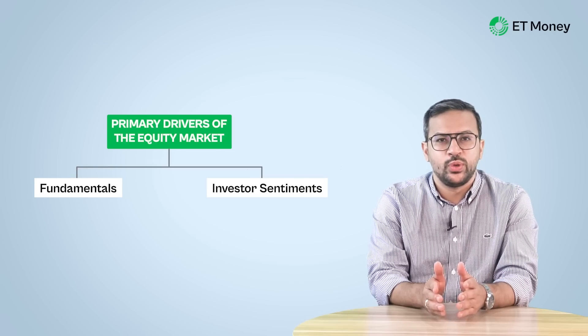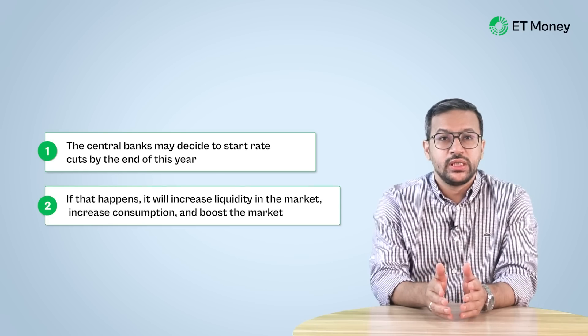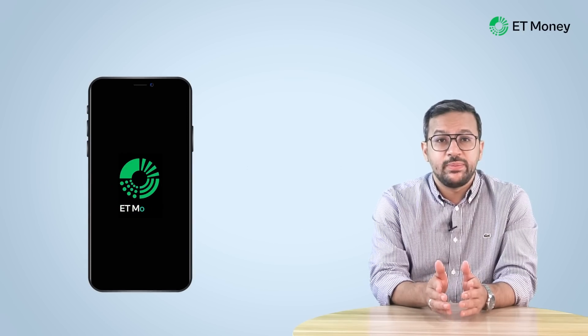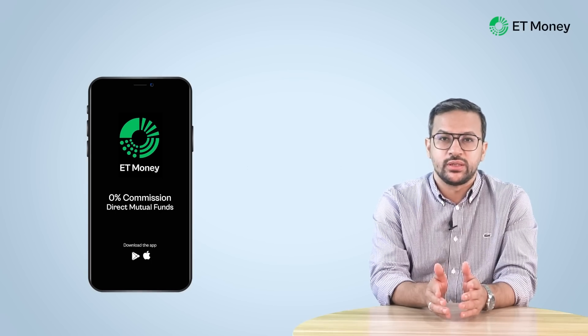The sentiment around Indian markets is broadly bullish. There are many factors that may contribute to an extended rally of the index — for example, central banks may decide to start rate cuts by the end of this year. If that happens, it will increase liquidity in the market, which can increase consumption and boost the market. Overall, if you are a long-term investor, we recommend continuing your SIPs and rebalancing your portfolio. In the current scenario, rebalancing could help to book profits from equities. This may not be a good time to make lump sum investments — don't get carried away by the market making new highs and invest a lump sum.